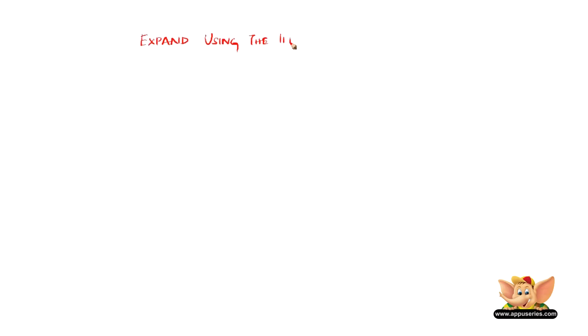Let us expand using the identity: a plus b the whole square equals a squared plus b squared plus 2ab.